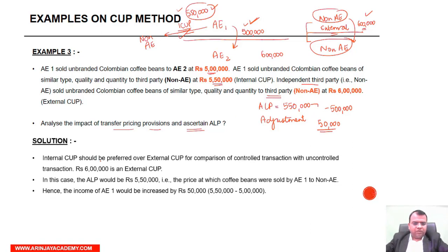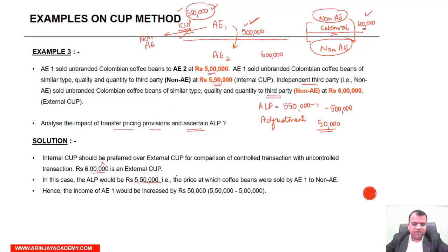Internal CUP should be preferred over external CUP. For comparison of the controlled transaction with the uncontrolled transaction, rupees 6,00,000 is the external CUP and therefore it will not apply. It is only rupees 5,50,000 — which is the internal CUP — which will be applicable. Hence the income of AE-1 will be increased by rupees 50,000, that is, internal CUP price minus the transfer price.